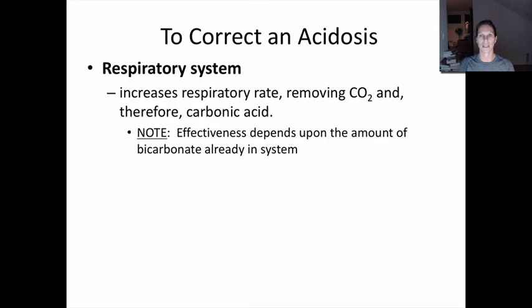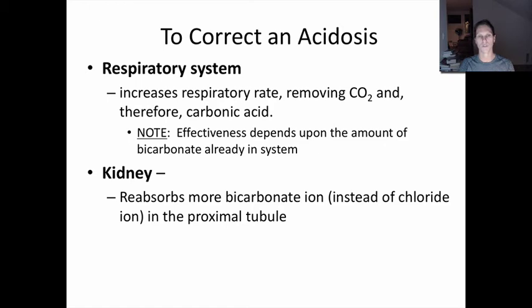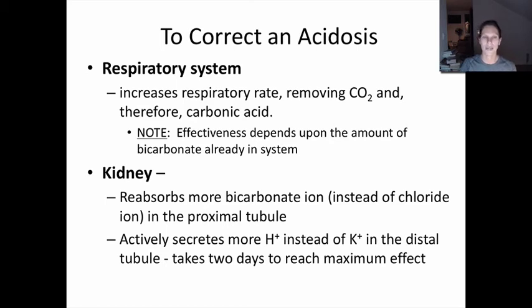To correct acidosis: the respiratory system hyperventilates to blow off CO₂, depleting blood hydrogen ions. In the kidney, in the proximal tubule, sodium is reabsorbed with bicarbonate using carbonic anhydrase, leaving chloride in the tube. At the distal tubule, under aldosterone, we preferentially secrete hydrogen ion and retain potassium. However, this can raise blood potassium levels, causing hyperkalemia.